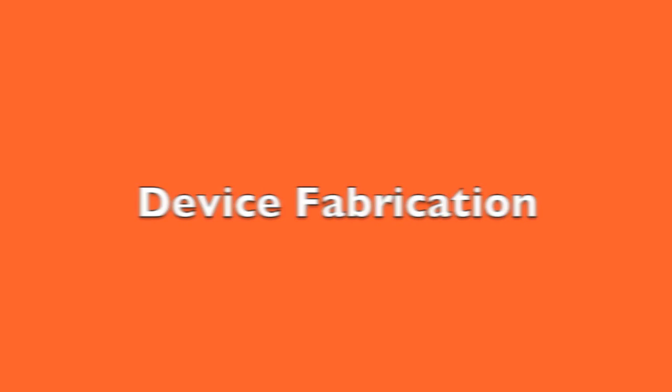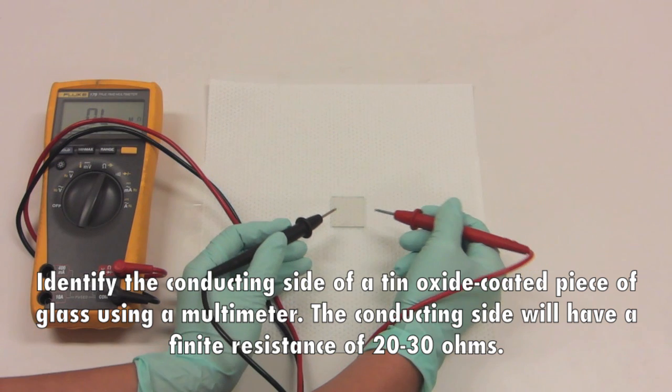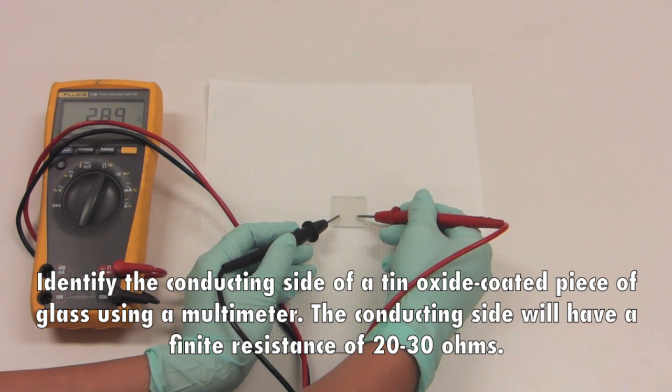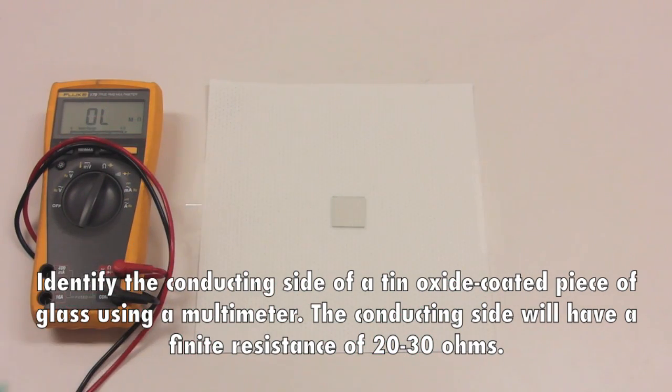Device fabrication: Identify the conductive side of a tin oxide coated piece of glass using a multimeter. The conducting side will have a finite resistance of 20 to 30 ohms.